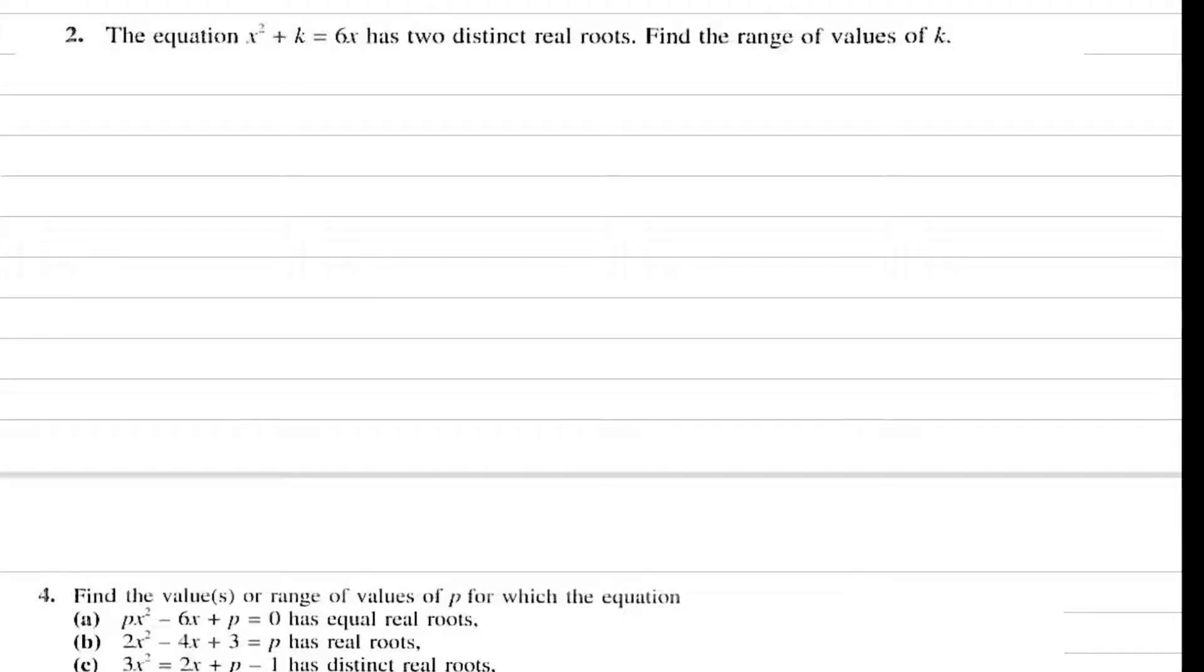Okay, so now we're doing question number two of the very same exercise. Let's read the question first. The equation x squared plus k equals 6x has two distinct real roots.